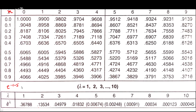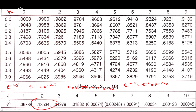For e raised to minus 1.5, we split it using the rule of indices: e raised to minus 1.5 = e raised to minus 1 multiplied by e raised to minus 0.5. So we take 0.36788 (value of e^-1) multiplied by 0.60653 (value of e^-0.5) and multiply them together. Similarly, for e raised to minus 2.3, we split into e raised to minus 2 multiplied by e raised to minus 0.3, using their respective table values.